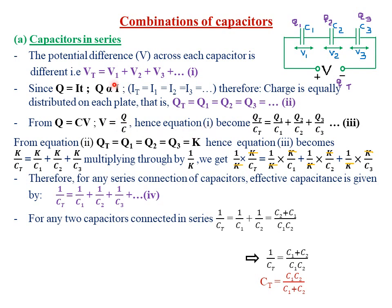Our equation 1 was V total equals V1 plus V2 plus V3. Therefore, our equation 1 will become: V total will be Q total over C total. Then it equals V1, which is Q1 over C1, plus V2, which is Q2 over C2, plus V3, which is Q3 over C3.